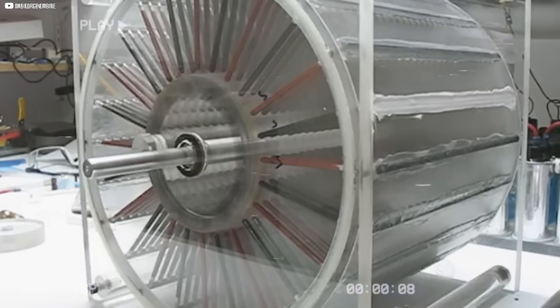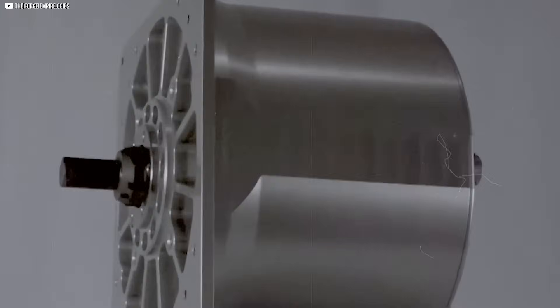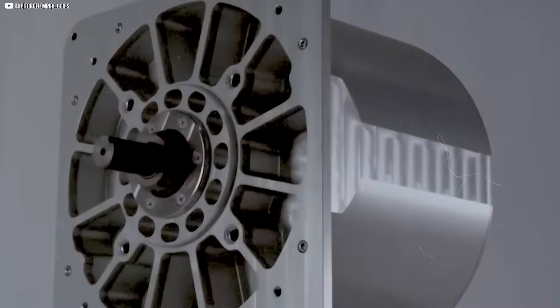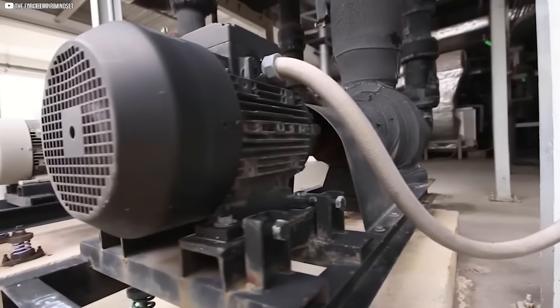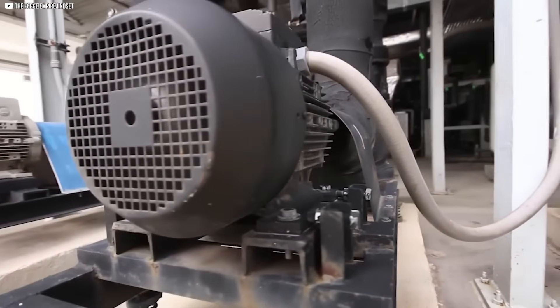Electrostatic motors detach from that weight. By using slim plates and high-voltage fields, the entire structure becomes far lighter. Some designs weigh only half as much as their magnetic rivals, making them easier to move and install.